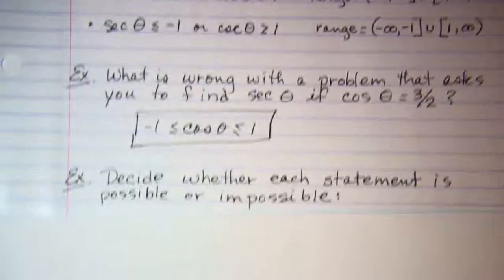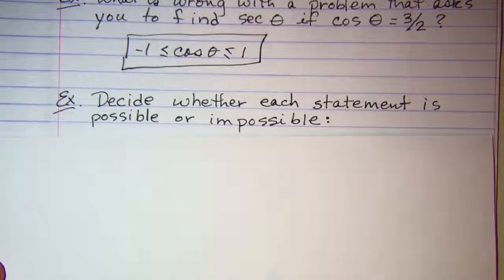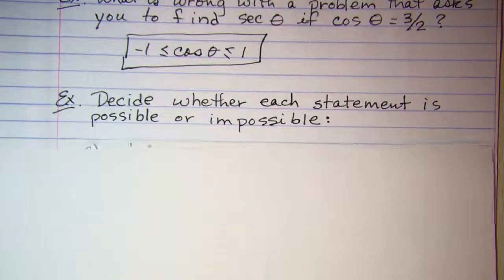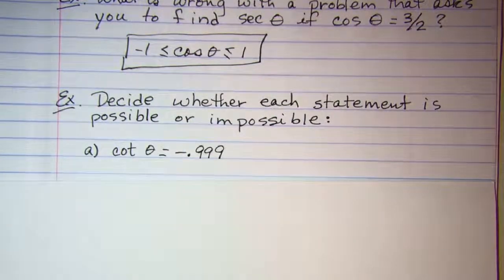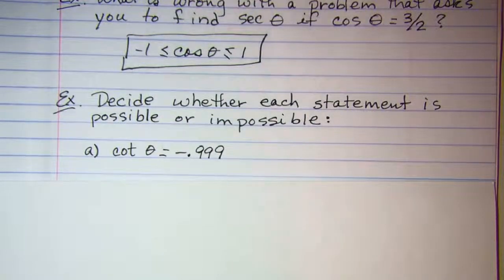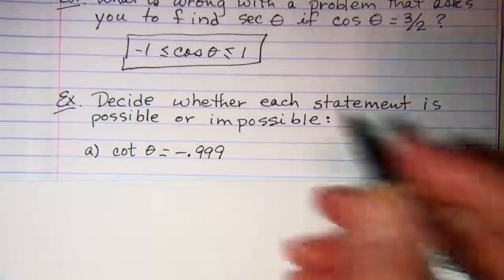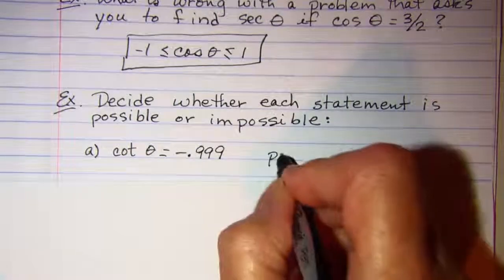Our next problems: we want to decide whether each statement is possible or impossible. The first one is cotangent theta equals negative 0.999. Well, cotangent and tangent both can be any value at all, so this statement is possible.